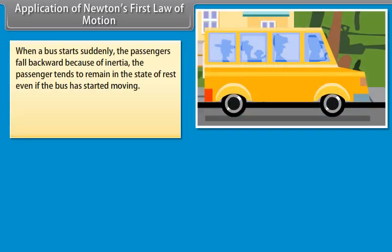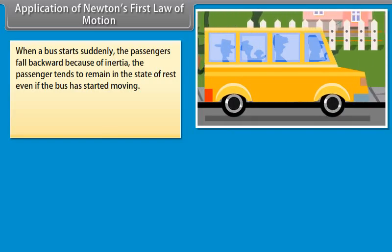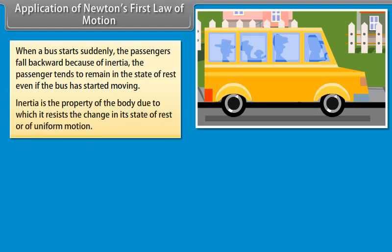When a bus starts suddenly, the passengers fall backward because of inertia. The passenger tends to remain in the state of rest even if the bus has started moving. Inertia is the property of the body due to which it resists the change in its state of rest or of uniform motion.